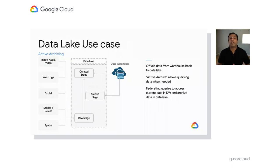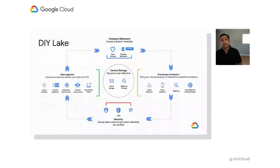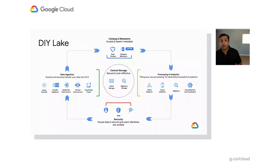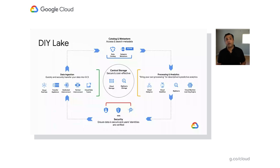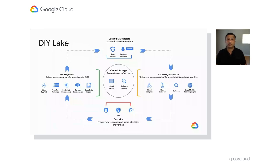All three use cases are primarily what we see with our customers on GCP. When building these use cases, the GCP components that make them happen include various different services that have to be brought together. Right now it's a do-it-yourself lake. There are two main things you need: central storage — whether structured, semi-structured, or unstructured — available as Google Cloud Storage or BigQuery Storage, and security for all of that data.